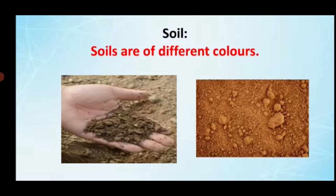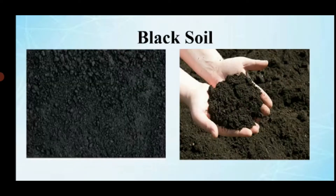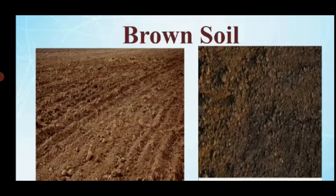Let us first learn about soil. Soils are different colors. If the soil is red in color, it is called red soil. If the soil is black in color, it is called black soil. If the soil is brown in color, we call it brown soil.